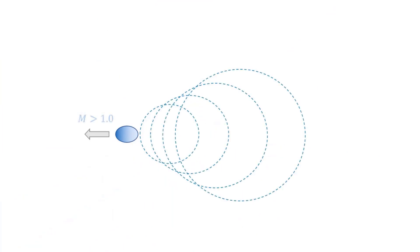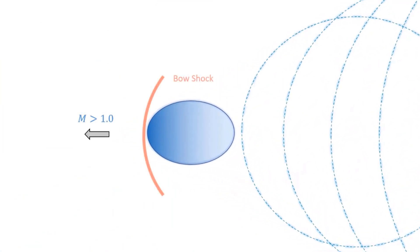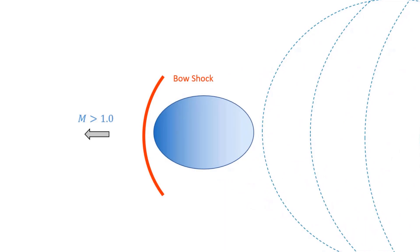As a result, these waves coalesce a short distance in front of the object and form a very thin wavefront. This is called a shock wave or simply a shock.